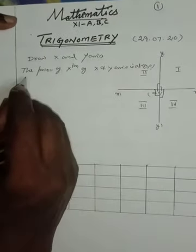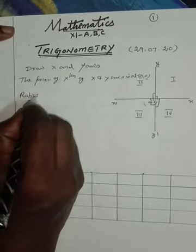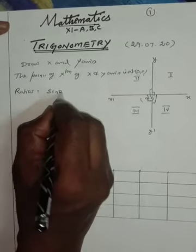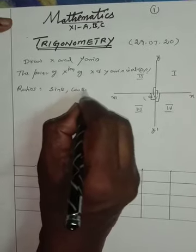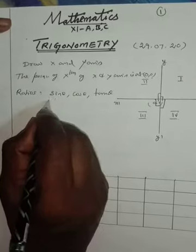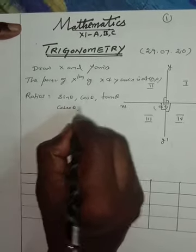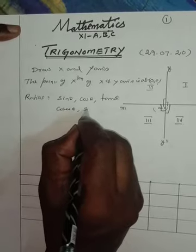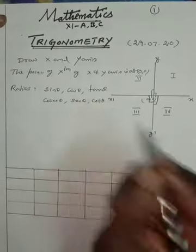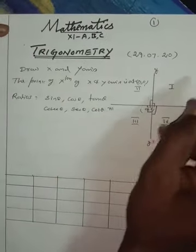We know the trigonometric ratios: sin theta, cos theta, and tan theta, and their reciprocals. One by sin theta is cosecant theta. One by cos theta is secant theta. One by tan theta is cot theta.